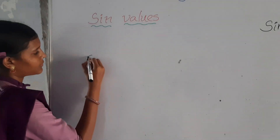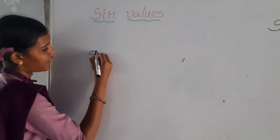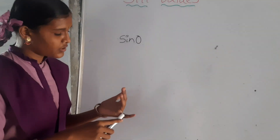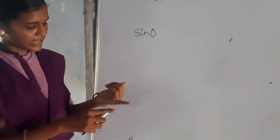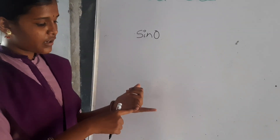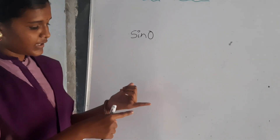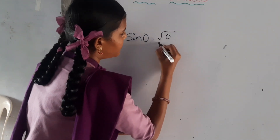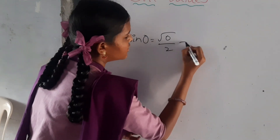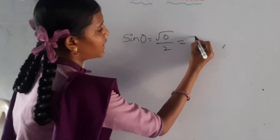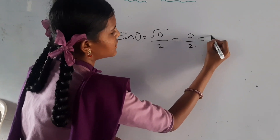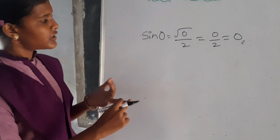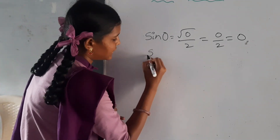So let us find the value of sin 0. We have assumed that the little finger has 0 degrees. The number of fingers below is 0. So root of 0 by 2 — root 0 is nothing but 0 by 2. Therefore sin 0 is equals to 0.